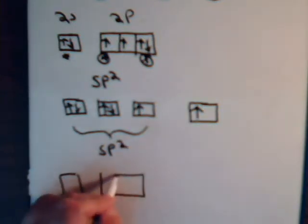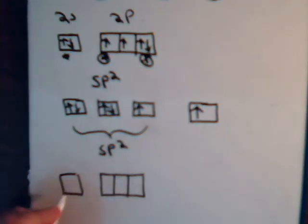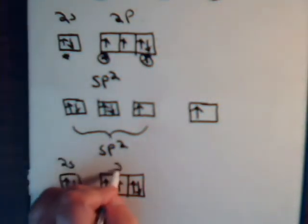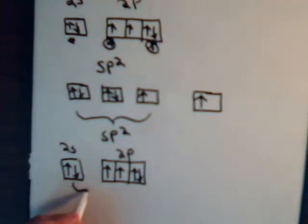Again, the orbital diagram for oxygen. This is the 2s; this is the 2p orbitals. Instead of having an sp2 hybridization, what would happen with oxygen if instead we had sp hybridization? We take the 2s orbital and combine it with the p orbital that has a single electron in it. Again, we're going to generate two equivalent sp molecular orbitals.